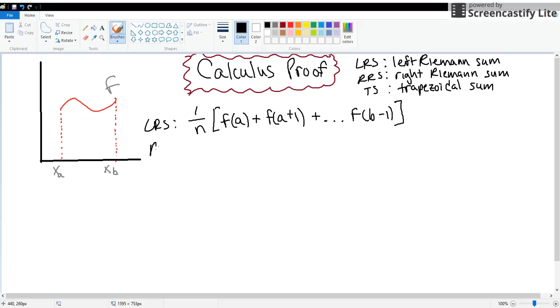And then if I were to take the right Riemann sum, it would just be the same formula with all the x values shifted up one unit. So this would be 1 over n times, instead of f(a), it would be f(a+1) + f(a+2) all the way up to, instead of b-1, it would be f(b).